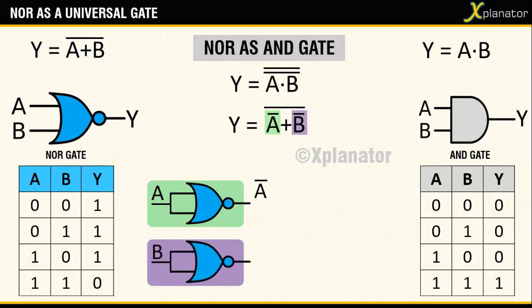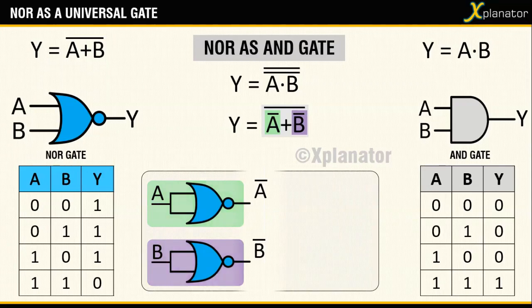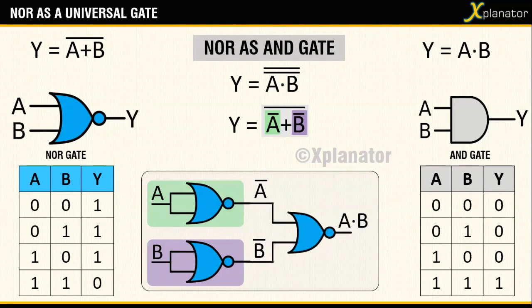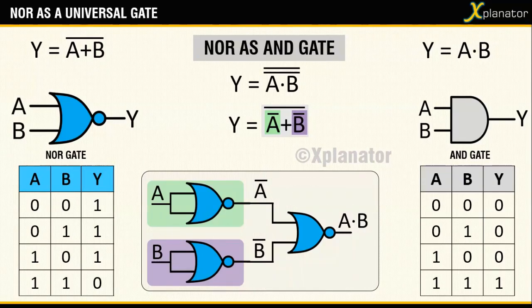Their outputs, A bar and B bar, are the inputs to the third NOR gate. The combination of these three NOR gates will give the same output as an AND gate.